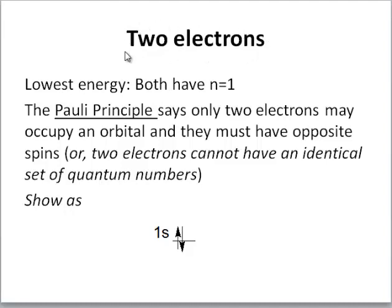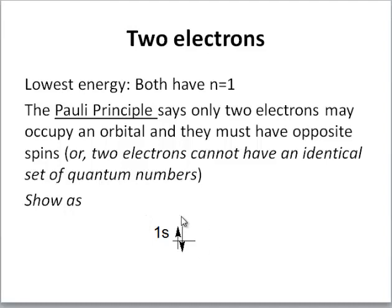Suppose we have two electrons. The lowest energy situation is both have n equals 1 — put both in the lowest energy state. The Pauli principle says only two electrons may occupy an orbital and they must have opposite spins. Another way of putting this is two electrons cannot have an identical set of quantum numbers. Here we have two electrons with n equals 1, and therefore l is 0 and m sub l equals 0 — they're both 1s electrons. They have three quantum numbers the same, so the spin quantum numbers have to be different: one is plus one-half and the other is minus one-half. This is an orbital diagram for a helium atom — an atom with two electrons in the lowest energy possible state.